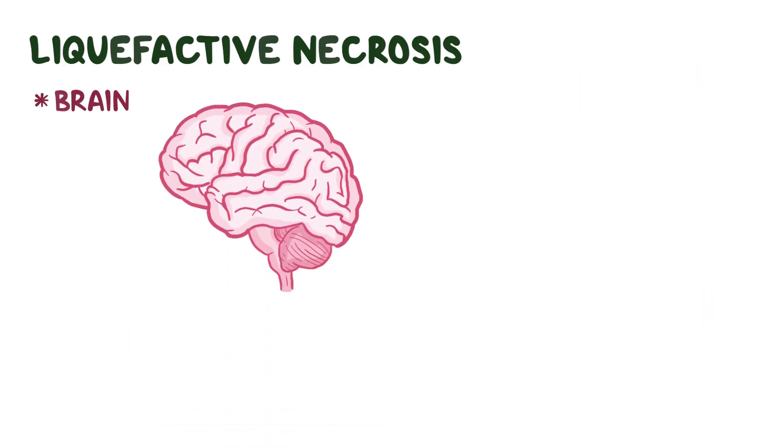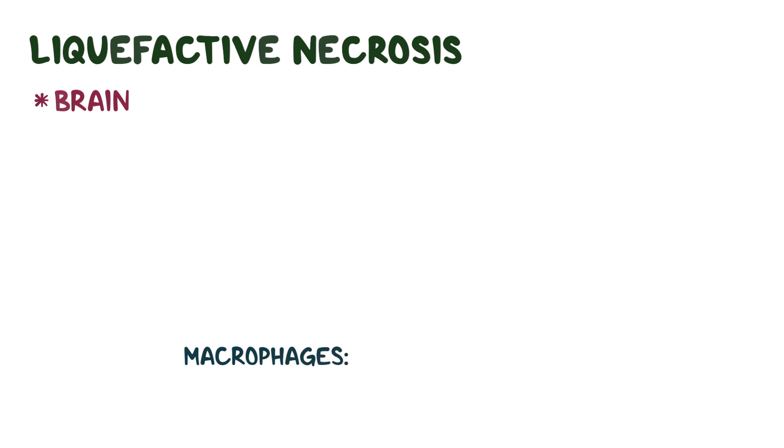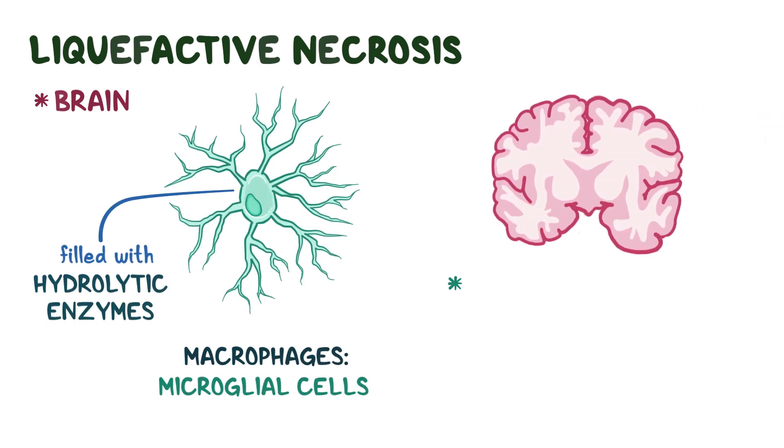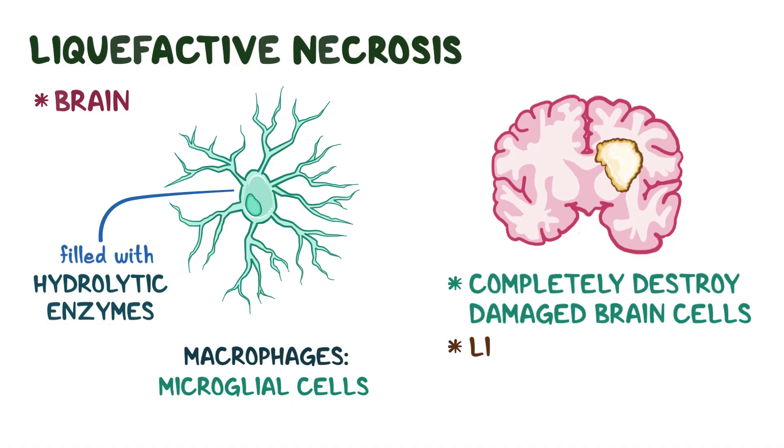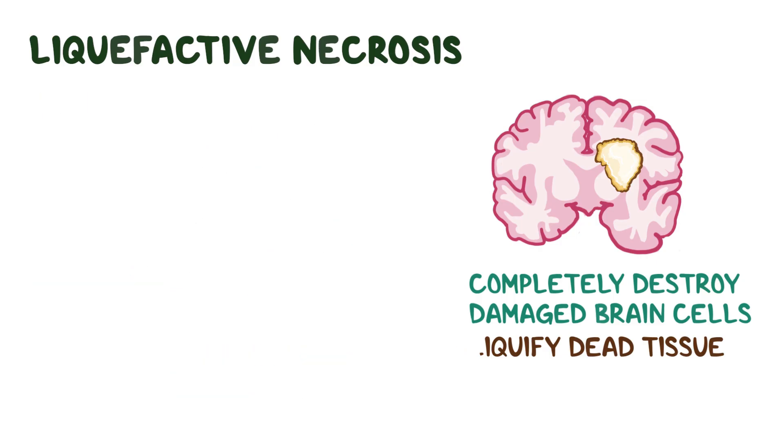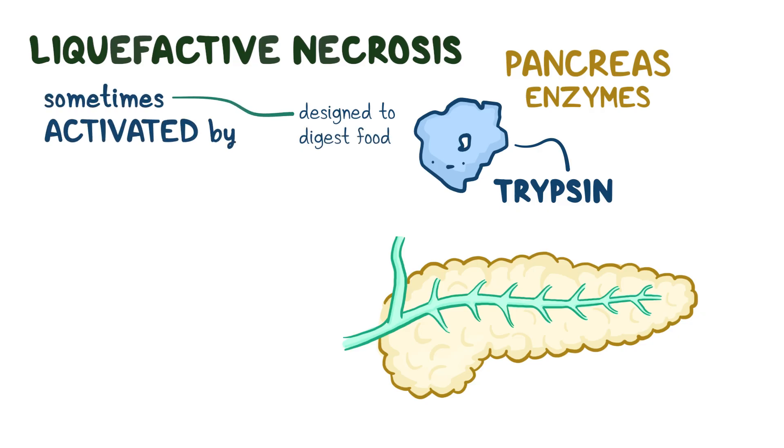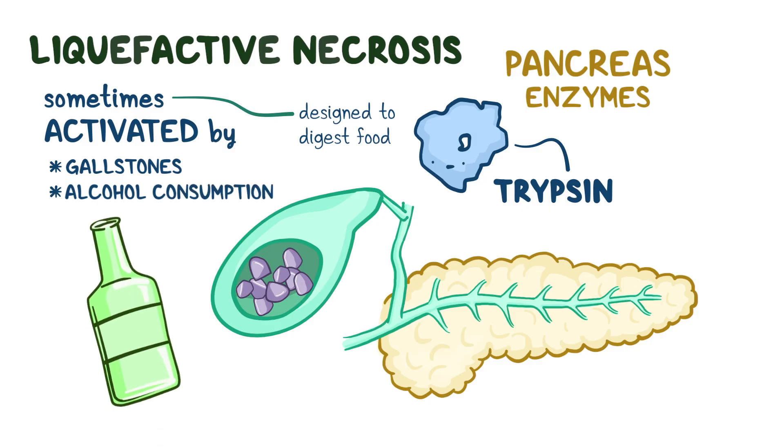The brain has resident macrophages called microglial cells that contain hydrolytic enzymes. These enzymes completely destroy damaged brain cells, basically liquefying the dead brain tissue. Similarly, the pancreas has various enzymes like trypsin that are designed to digest food, but sometimes get activated in chronic inflammation due to gallstones or alcohol consumption and destroy the pancreatic tissue itself.